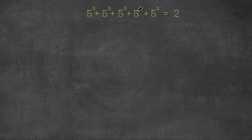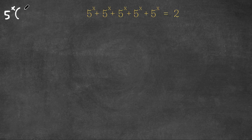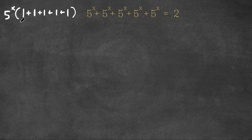Now, because our left-hand side here has all our terms being 5 to the power of x, what I'm going to do is factor out 5 to the power of x from our left-hand side. So by doing that, I get 5 to the power of x times 1 plus 1 plus 1 plus 1 plus 1. Now we want to simplify what's in the parentheses — 1 plus 1 plus 1 plus 1 plus 1 — that's going to be 5.